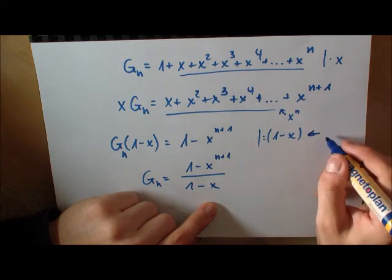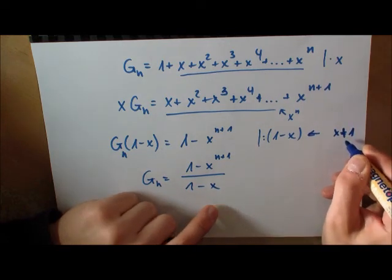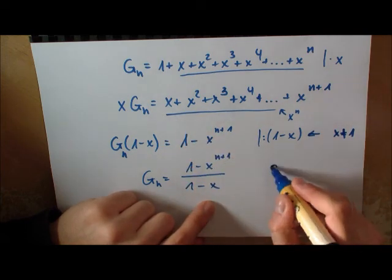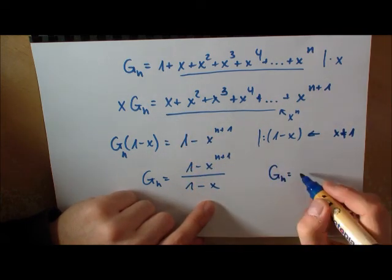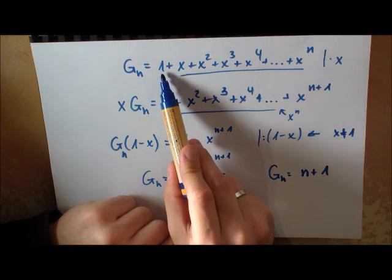Now a very very important thing here: when dividing by 1 minus X, I was not allowed to have X equals 1. This is not allowed. For X equals 1, the geometric series is actually not geometric anymore.